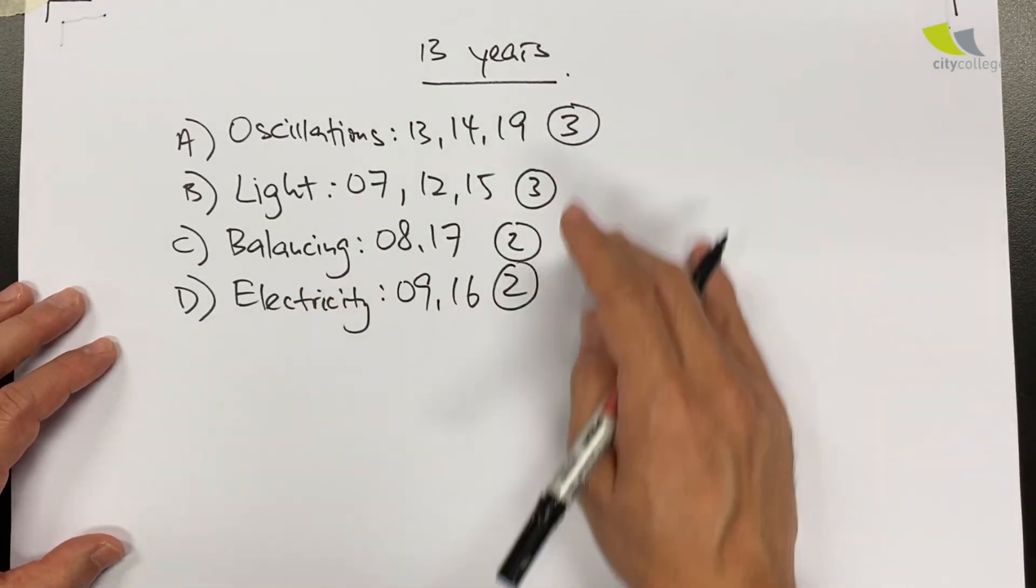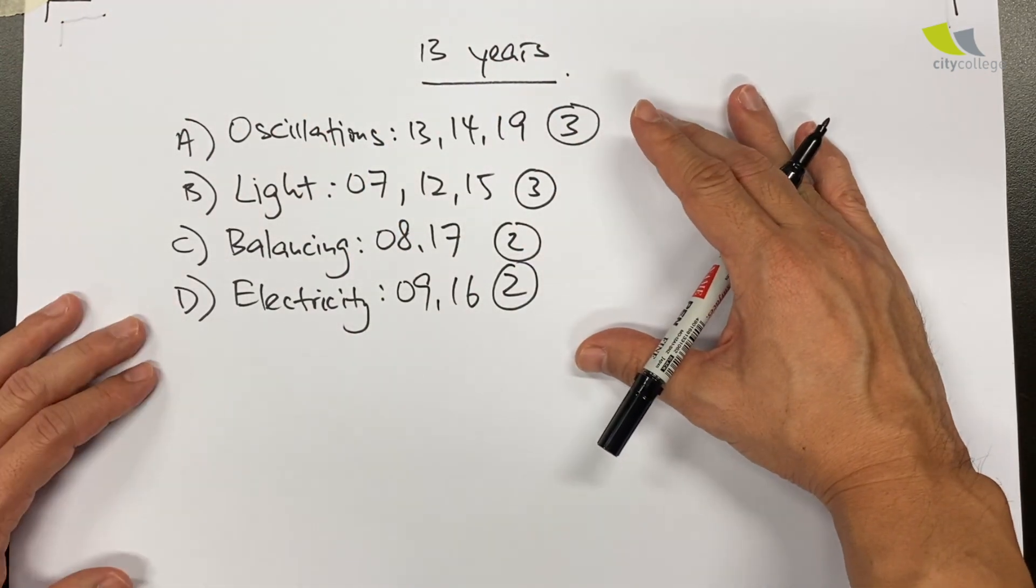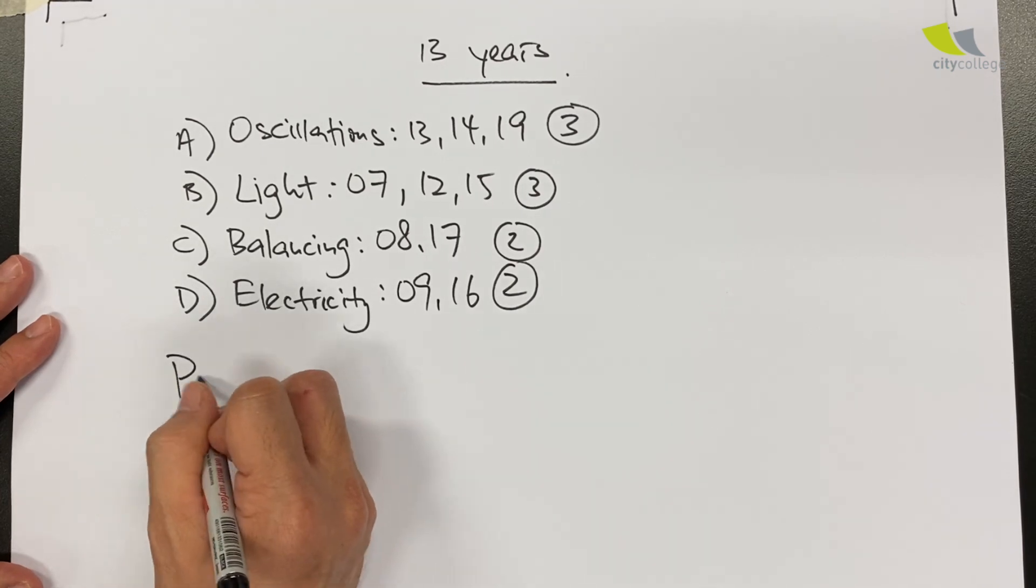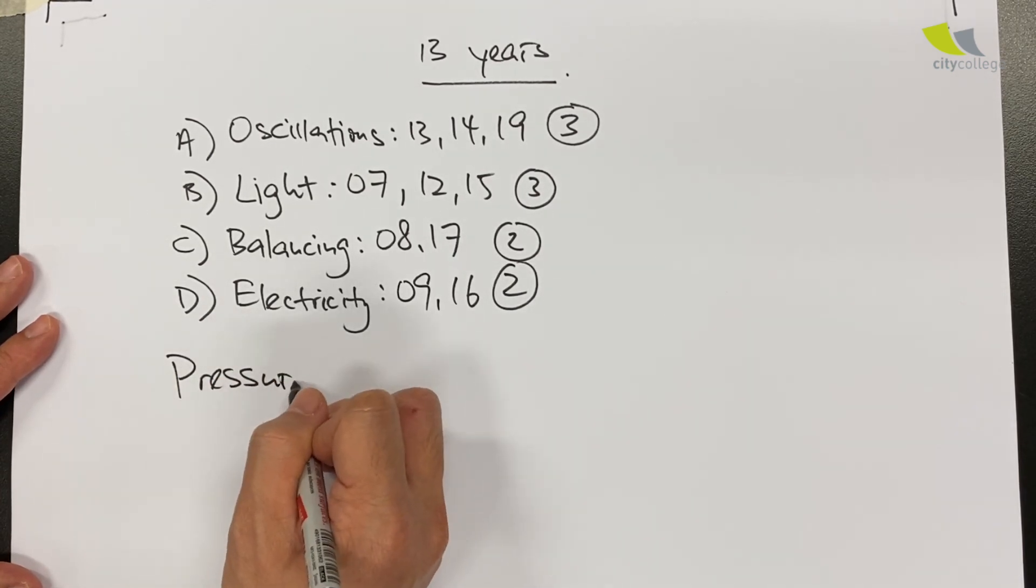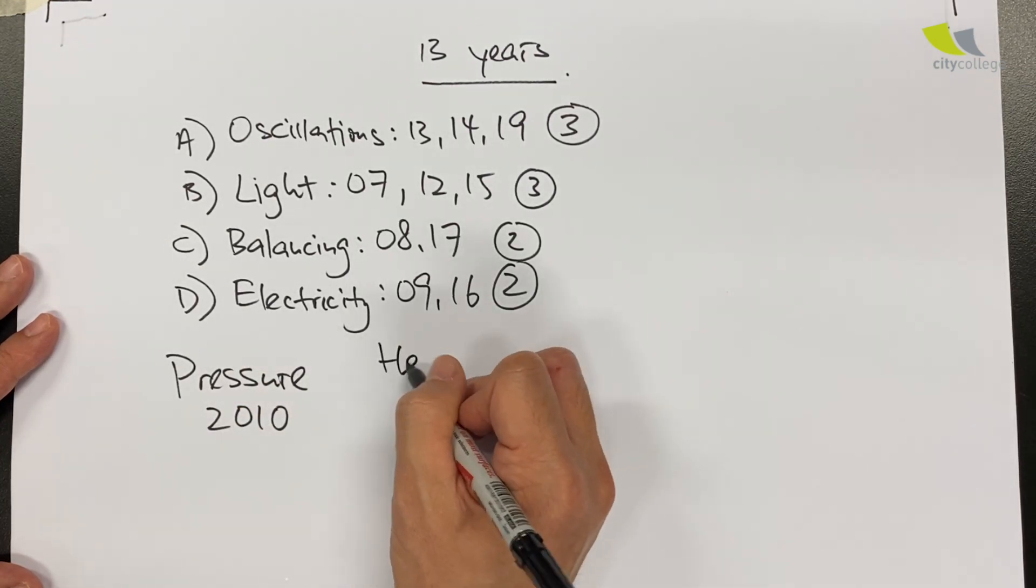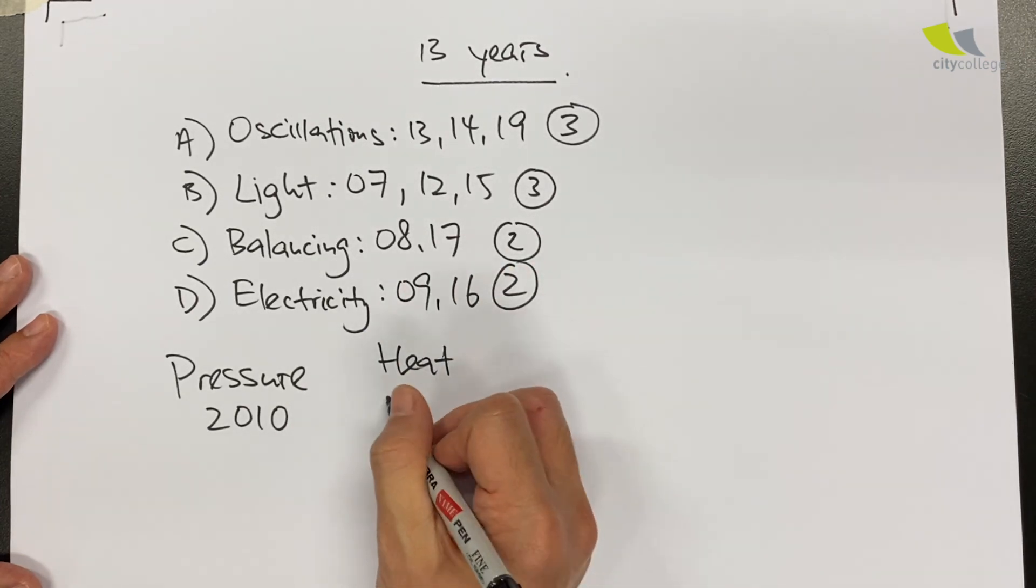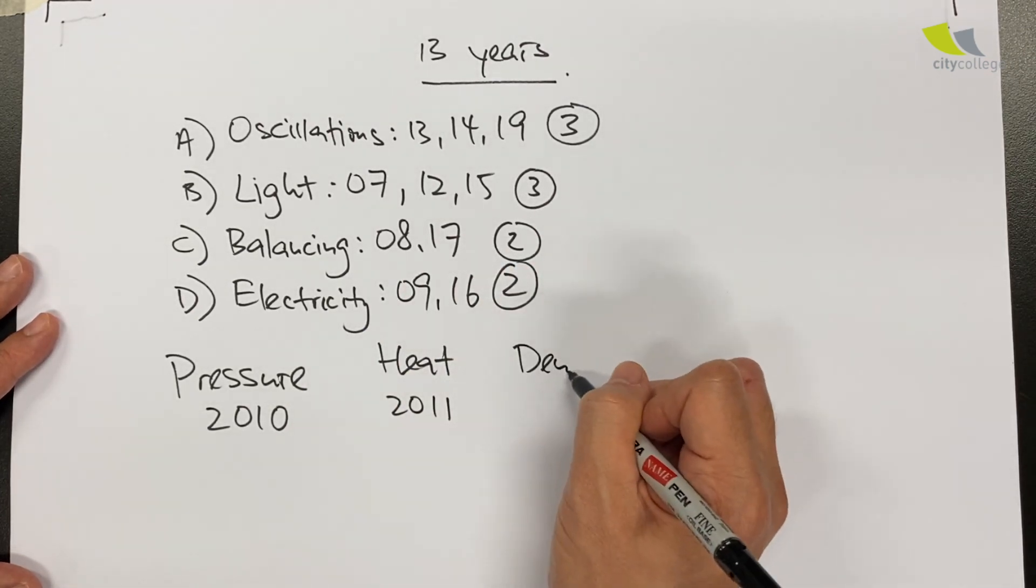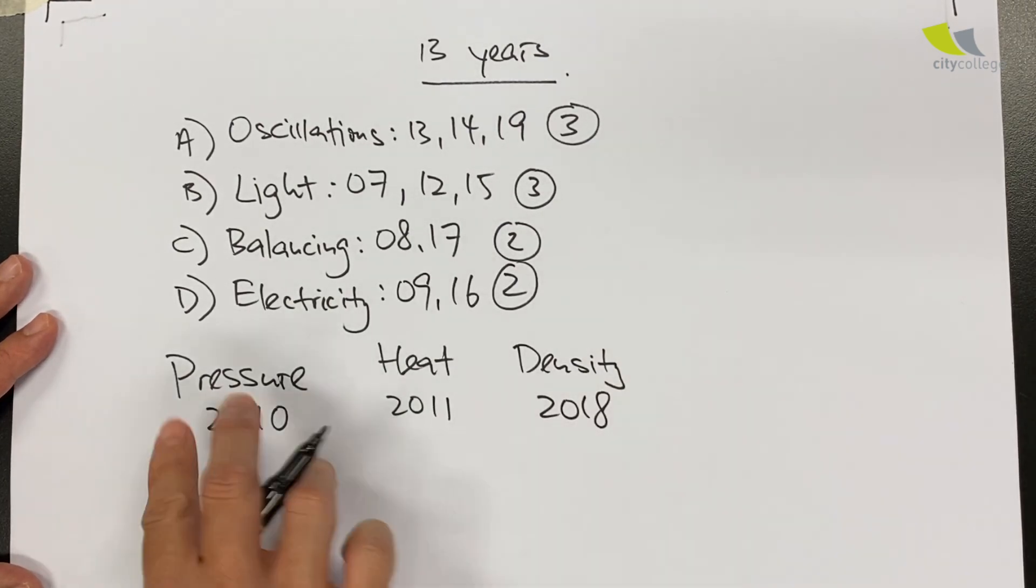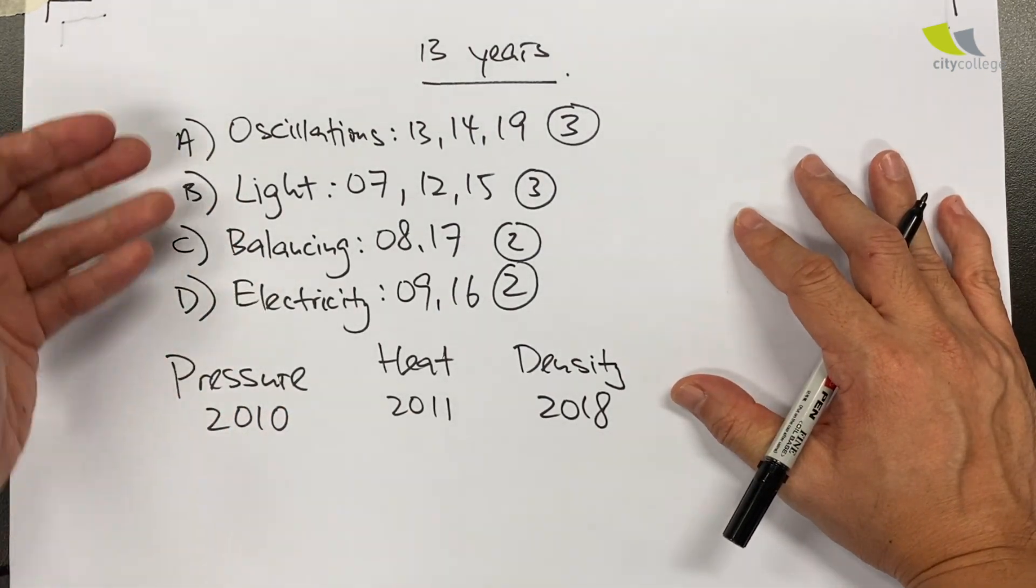These are the four more popular skill sets or topics. Then we have three other ones that only came out once. There was one year the experiment is based on pressure in 2010, only came out once. One year experiment based on the rate of heat change in 2011. One year which is based on density of oil came out in 2018. So these are very isolated ones.